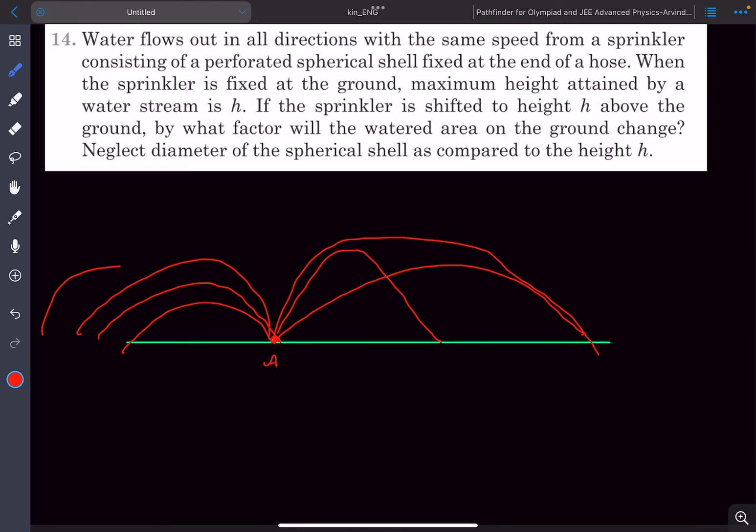So there will be water flowing in all directions - it's a 3D diagram basically. Considering all possible directions in which water can flow, the maximum height will be attained by the stream of water that is going straight up.